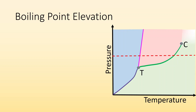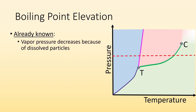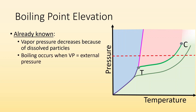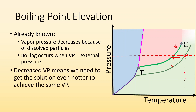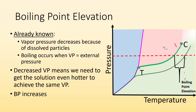Boiling point elevation. Now that we talked about vapor pressure, let's talk about boiling point. We already know that vapor pressure decreases because of dissolved particles. And we also know that boiling point is when the vapor pressure equals the external pressure. Since we decreased the vapor pressure, this whole line on the phase diagram shifts over, which means to get to the same vapor pressure we have to get to a higher temperature. So decreased vapor pressure means we need to get the solution even hotter to achieve boiling — the boiling point is going to increase. That difference is called the boiling point elevation.